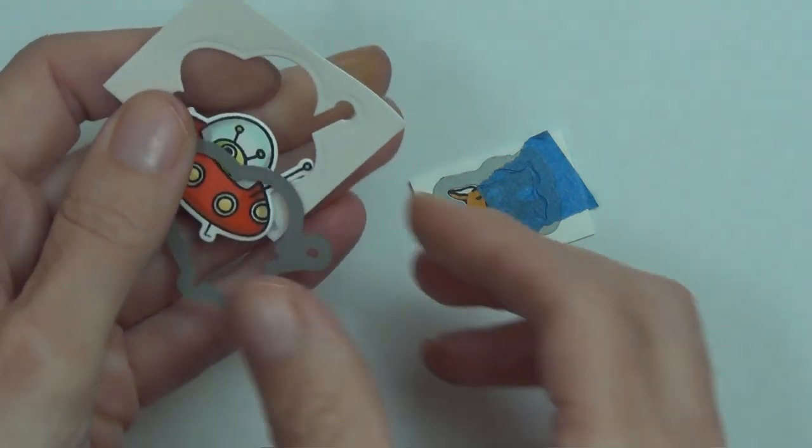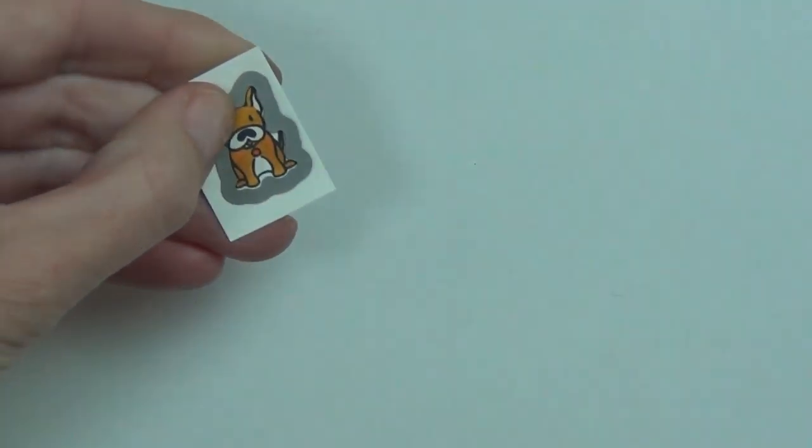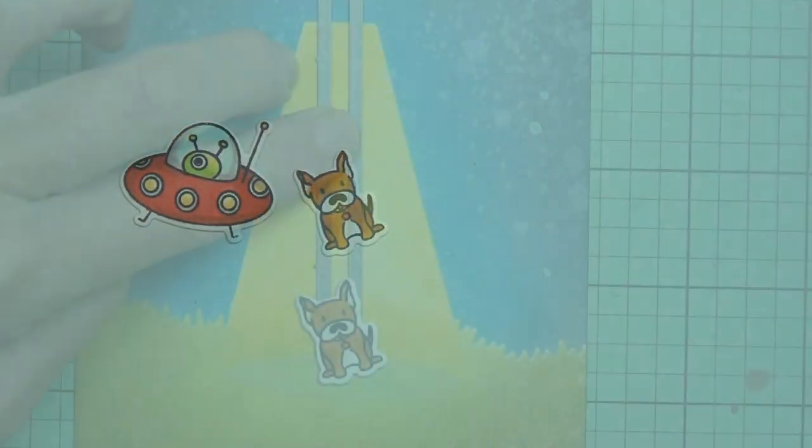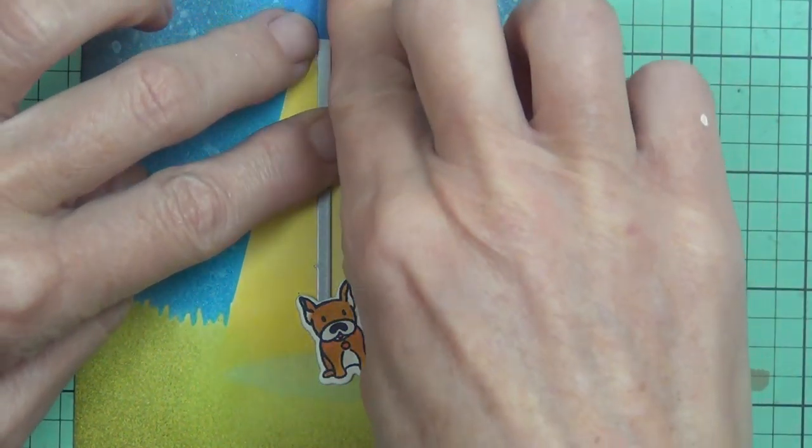So that's the end of my background. I've already stamped and I'm die cutting two images. I thought it'd be fun to have the little doggy from the Good Times stamp set be the image that gets lifted up into the spaceship.